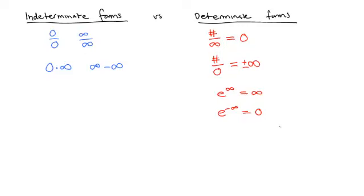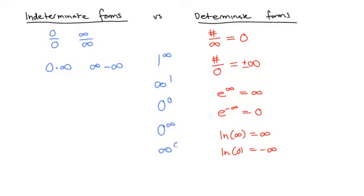The point is it's sometimes hard to distinguish determinant from indeterminate forms at a glance. We have determinant forms: nonzero/∞ = 0, nonzero/0 = ±∞, e^∞ = ∞, e^(-∞) = 0, ln(∞) = ∞, and ln(0) = -∞. Now consider exponential forms: 1^∞, ∞^1, 0^0, 0^∞, and ∞^0. Most people's intuition says 1^∞ = 1, ∞^1 = ∞, 0^0 = 1, 0^∞ = 0, and ∞^0 = 1.